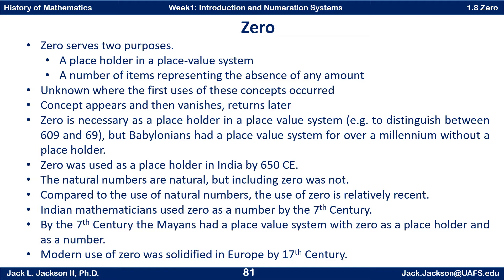However, in spite of what we think of as being a necessity, the Babylonians actually had a place value system. They were the first to have a place value system, and they had it in place for over a millennium — over a thousand years — without a placeholder. So it didn't seem as obvious to them. And even when they did eventually introduce something as a placeholder, it was not really represented as a number in and of itself, but only as a placeholder — over a thousand years after they first introduced their number system.